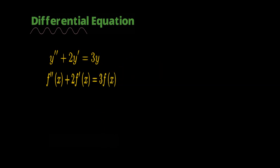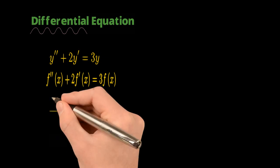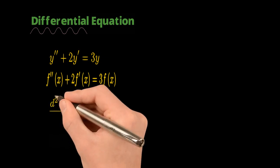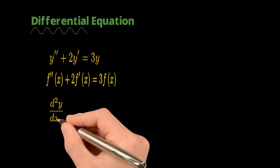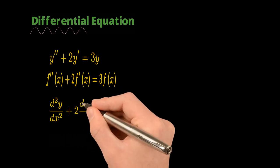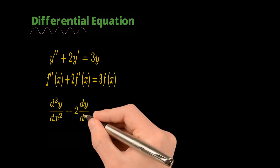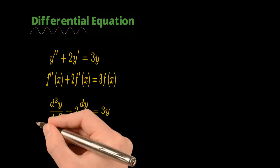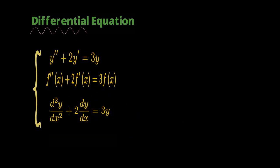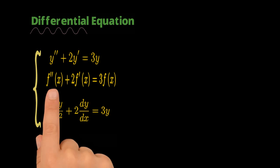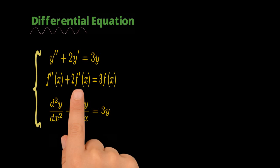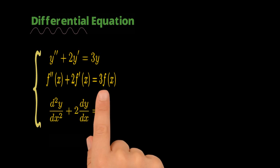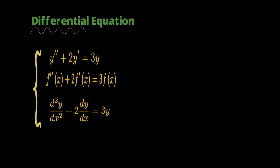Or if we wanted to use the Leibniz notation, we could write the second derivative of y with respect to x plus two times the first derivative of y with respect to x is equal to three times y. All three of these equations are really representing the same thing — can I find functions where the second derivative plus two times the first derivative is equal to three times the function itself?